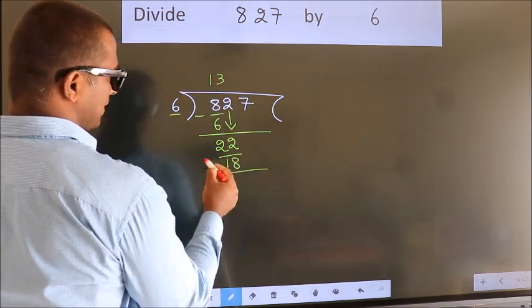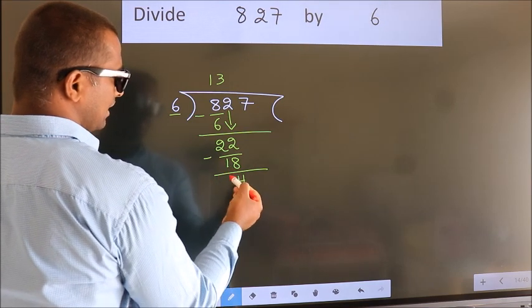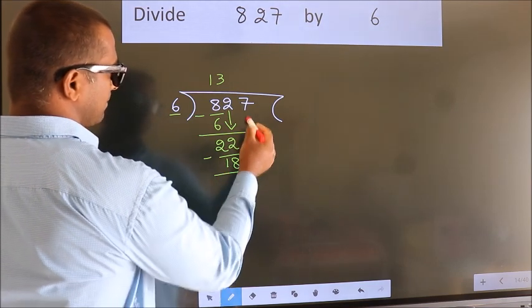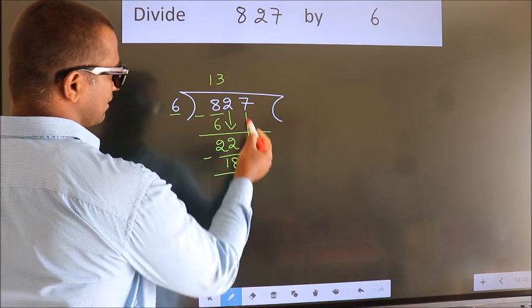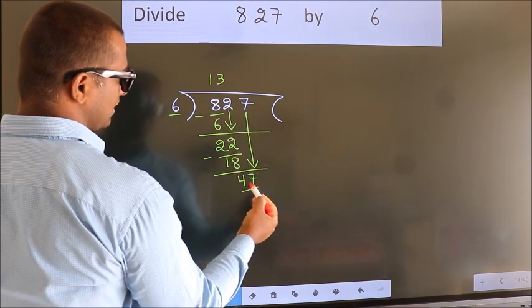Now we subtract and get 4. After this, bring down the next number. 7 down, making 47.